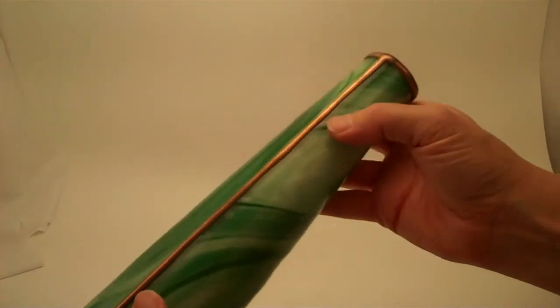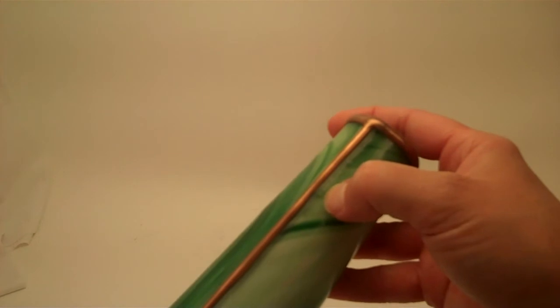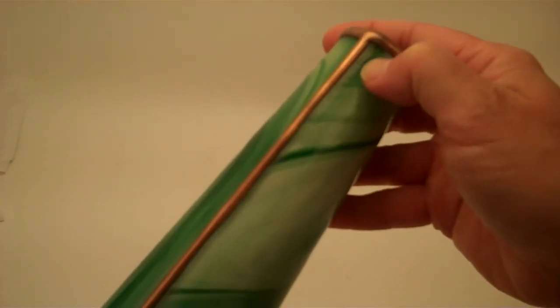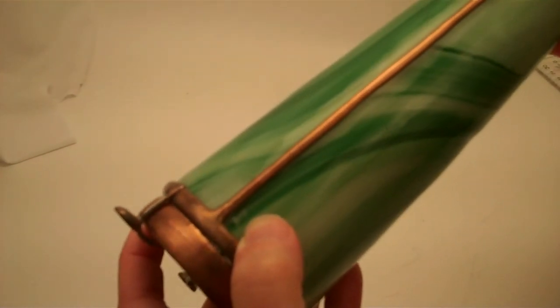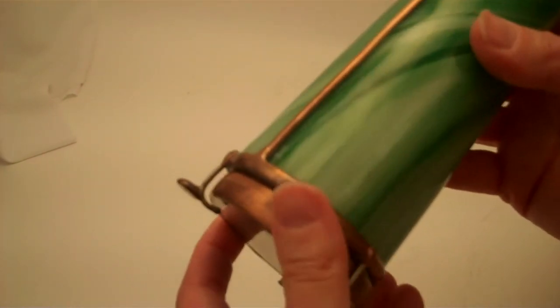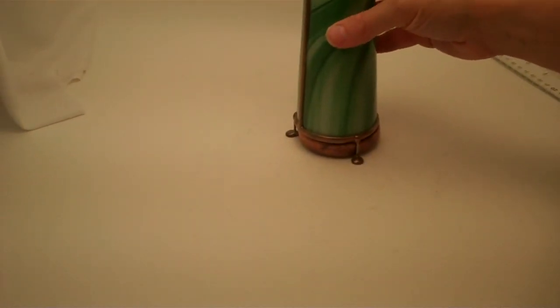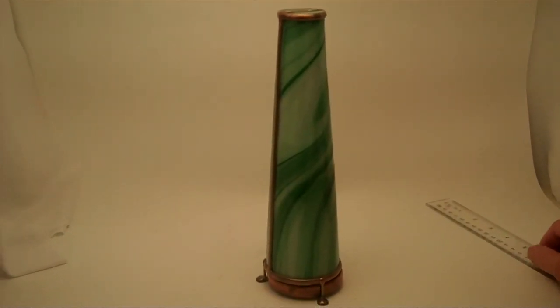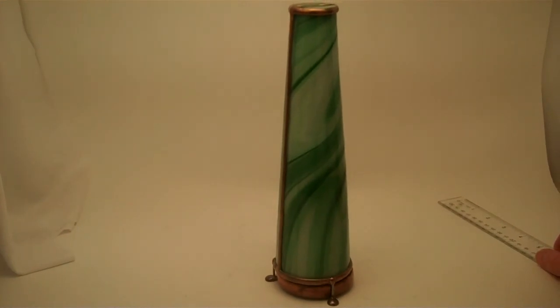Charles signs his creations by etching directly into the glass. Here you'll see the etching of C.S. Karadimos 2012 and the number 303, as this is number 303 in the series of production of the cone kaleidoscopes.